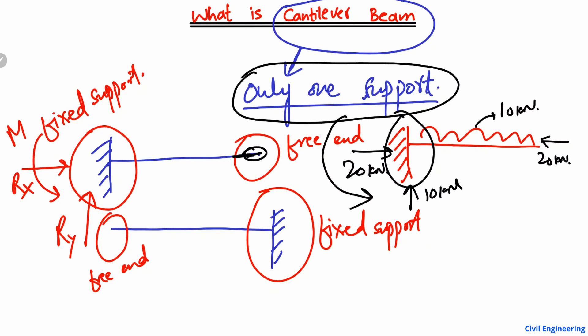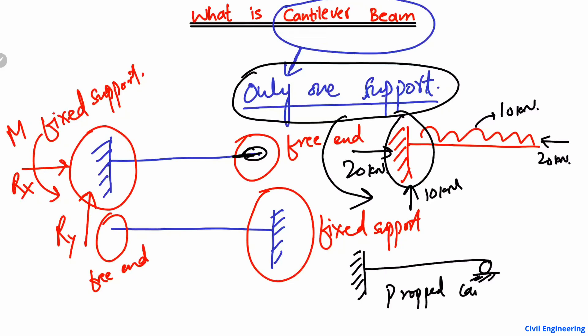There is also another type of cantilever beam — we call it the propped cantilever beam. For example, this end is a fixed support, and then the other end of the beam is supported by a roller support. This type of beam is known as a propped cantilever beam.